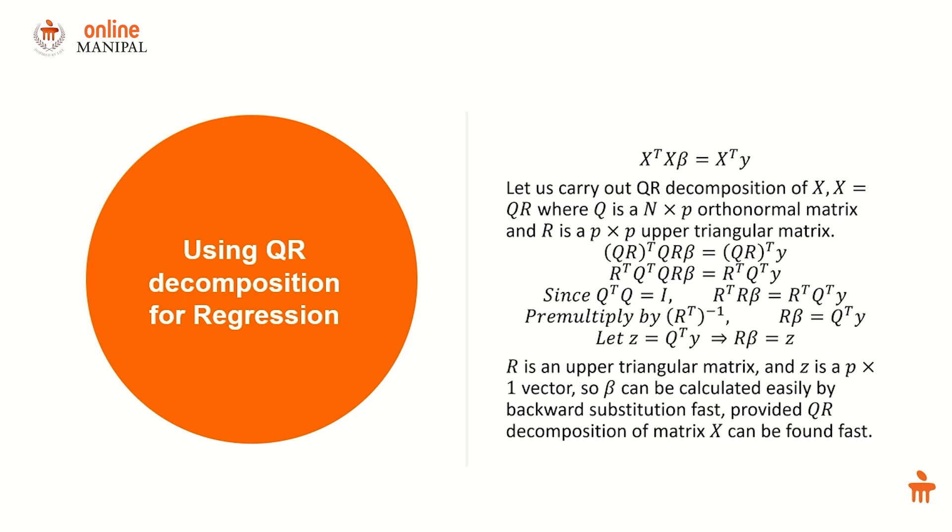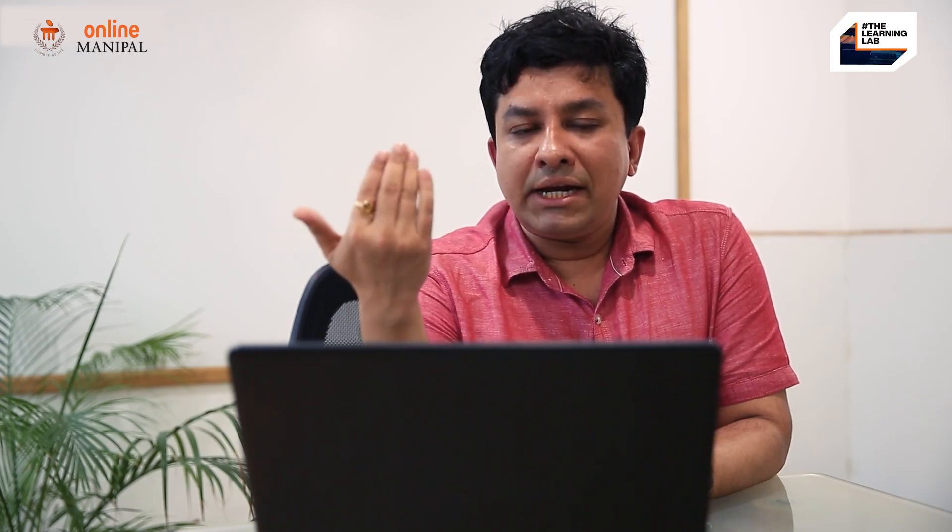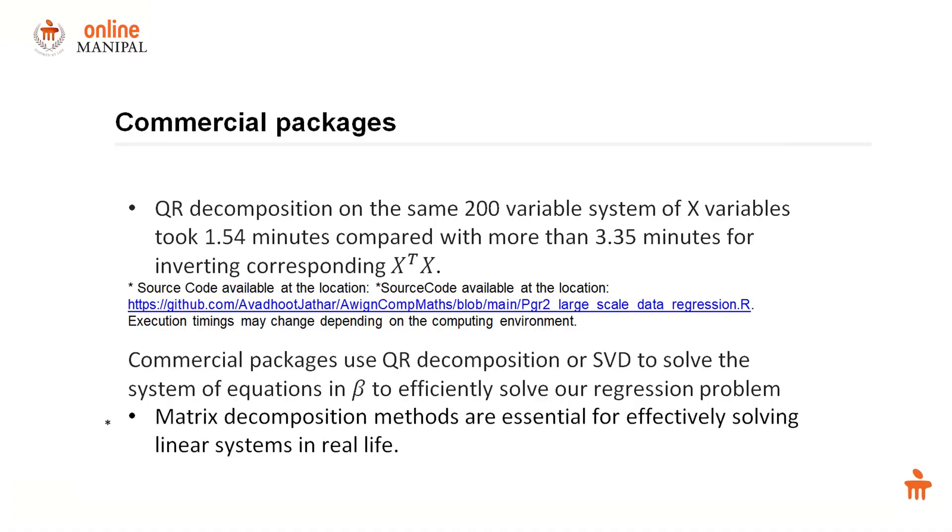Therefore we can easily calculate beta by backward substitution in a very fast way. The system of equations is such that you can carry out backward substitution very easily and get these betas in a much faster way compared to doing matrix inversion of x prime x.